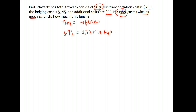He also had dinner and lunch. They want to know how much lunch was if dinner is twice as much as lunch. Here's where we bring in variables. Let's call lunch X — we don't know how much lunch is. If dinner was twice that much, we'd write 2X for dinner. So we add X for lunch and 2X for dinner.